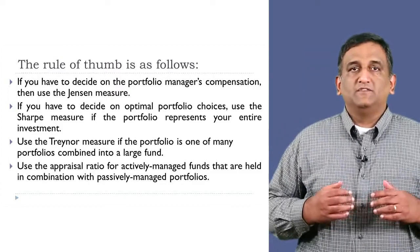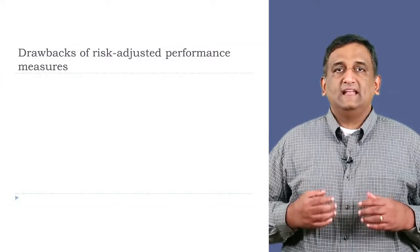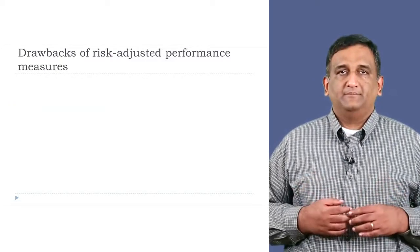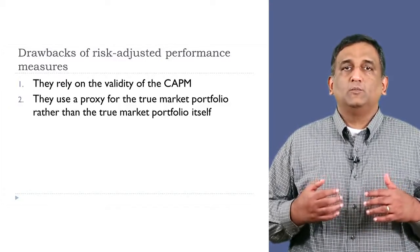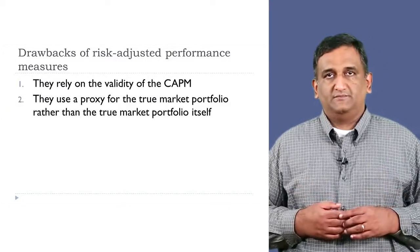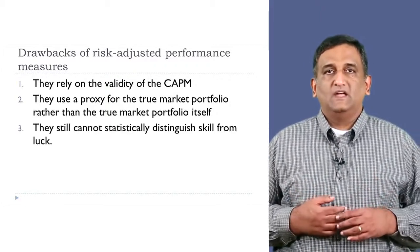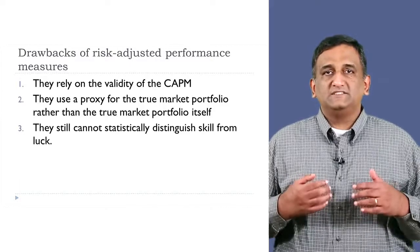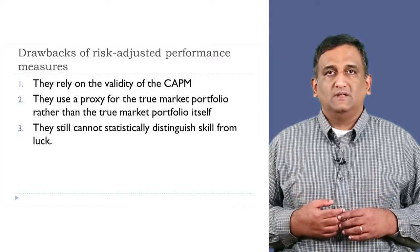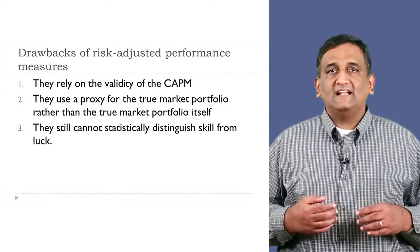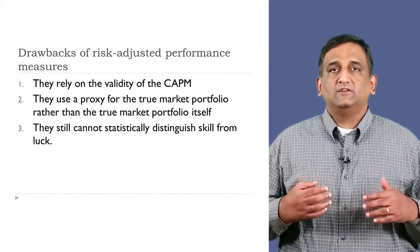There are still some drawbacks of using these risk-adjusted performance measures. One, they rely on the validity of the CAPM. Two, they use a proxy for the true market portfolio rather than the true market portfolio itself. Three, they still cannot statistically distinguish skill from luck. We found that portfolio P's Sharpe measure was 0.04 lower than that of portfolio Q's, but we can't say if that is statistically a large difference or not, as this number is not a rate of return.